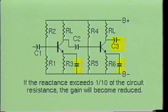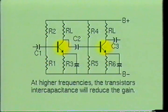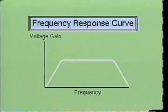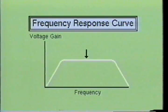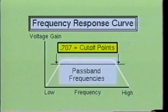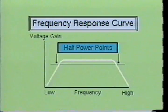At higher frequencies, the intercapacitance of the transistor will reduce the gain of the amplifier, again resulting in a reduction of the output signal. The frequency response curve of a typical amplifier shows that the voltage gain is fairly constant for the middle portion of the response curve, and the gain drops off appreciably at each end. When the gain falls to 0.707 of the response curve, the signal is said to be at the cutoff frequency point. There will be a cutoff point at the low frequency end and one at the high frequency end. The range of frequencies between these two cutoff points is called the passband frequency. At the cutoff points, only one half of the power is available; therefore, these cutoff points are sometimes referred to as the half power points.